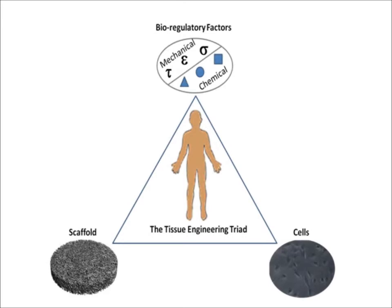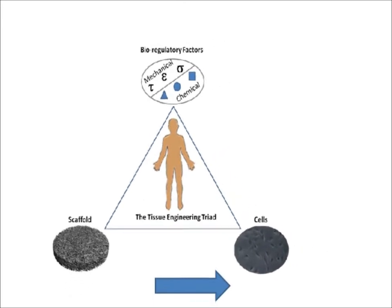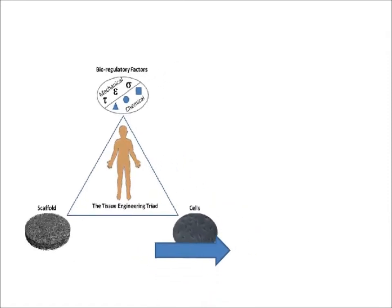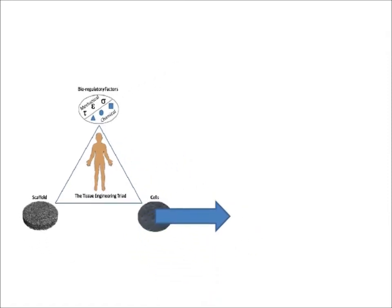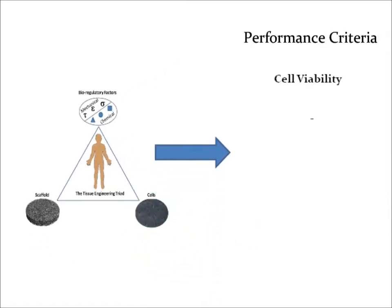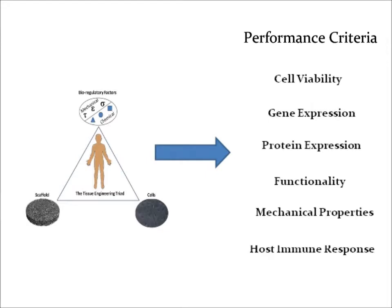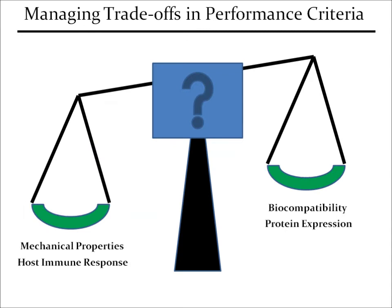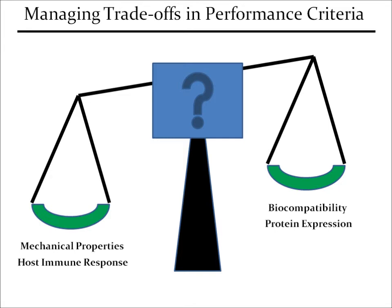The choices made with respect to these input variables will ultimately determine the type of tissue produced, with success being judged based on multiple performance criteria reflecting both the quantity and quality of the fabricated tissue. Managing the trade-offs between these different performance criteria as a function of the culture conditions is a major challenge for researchers.